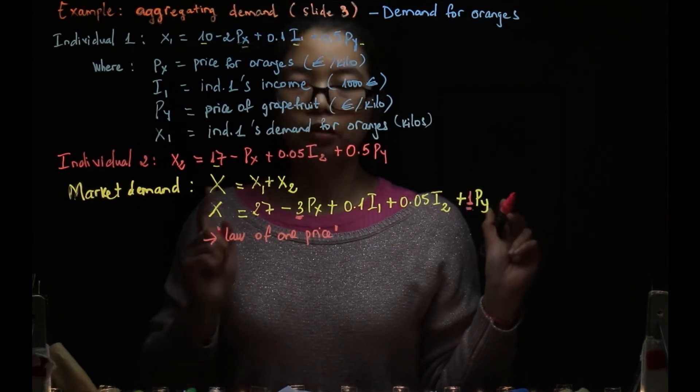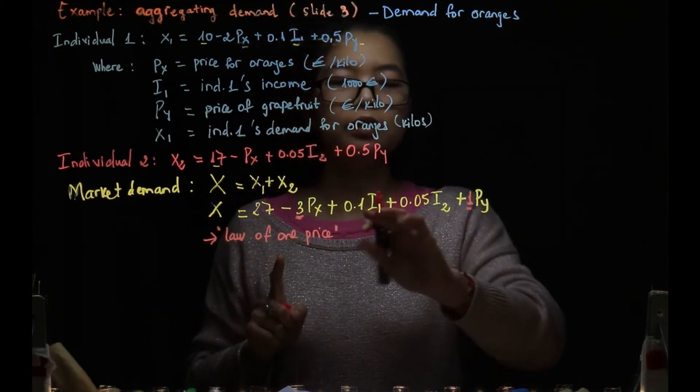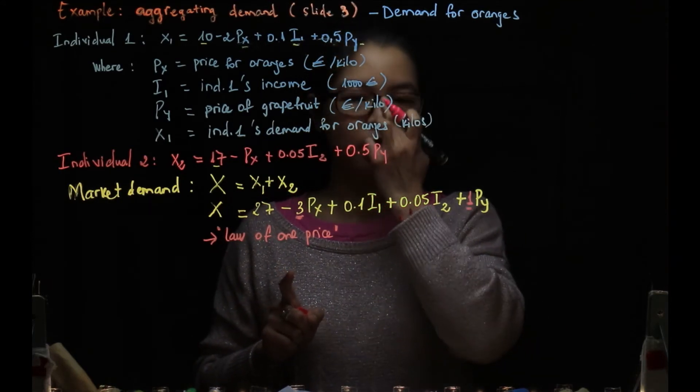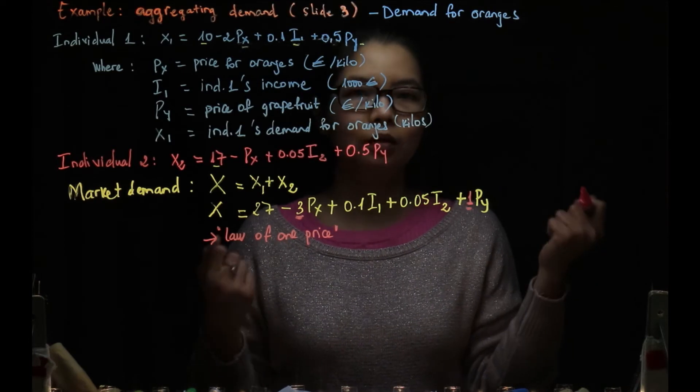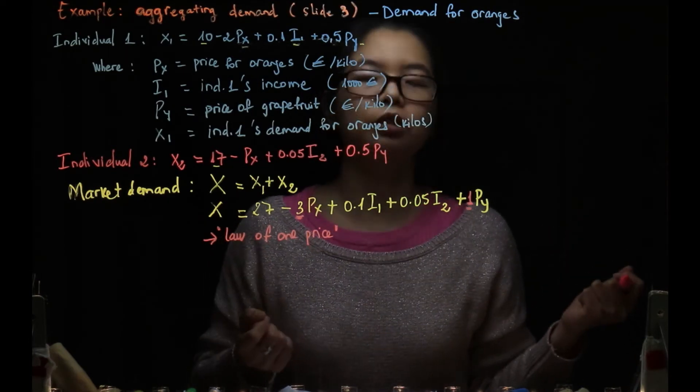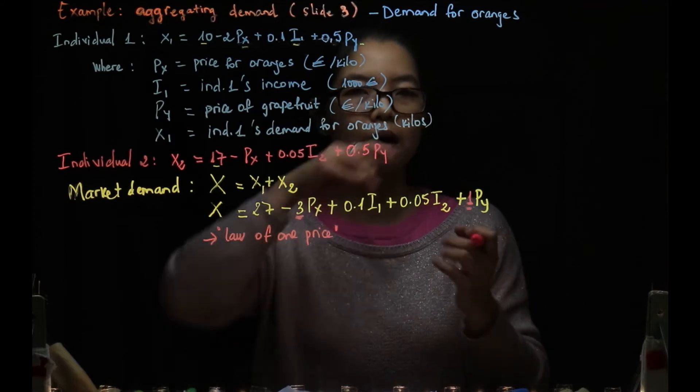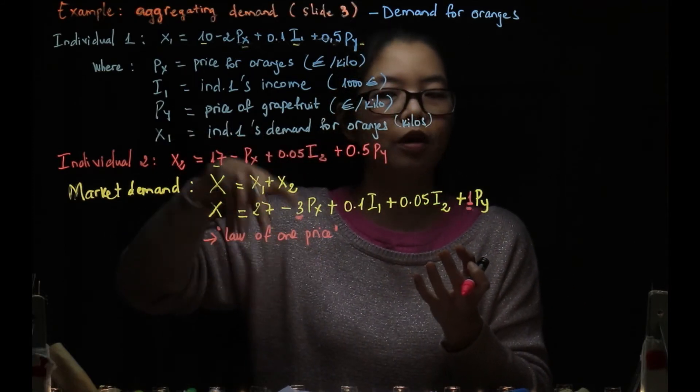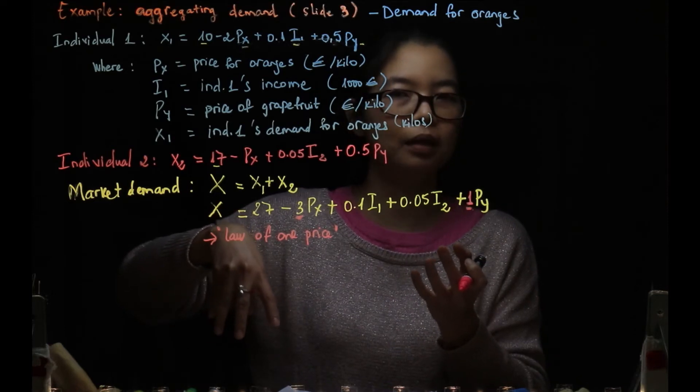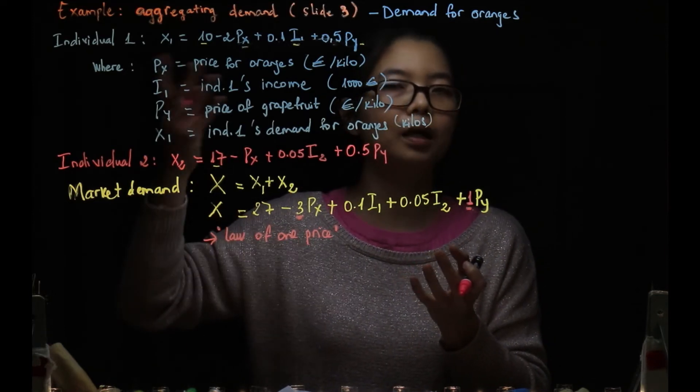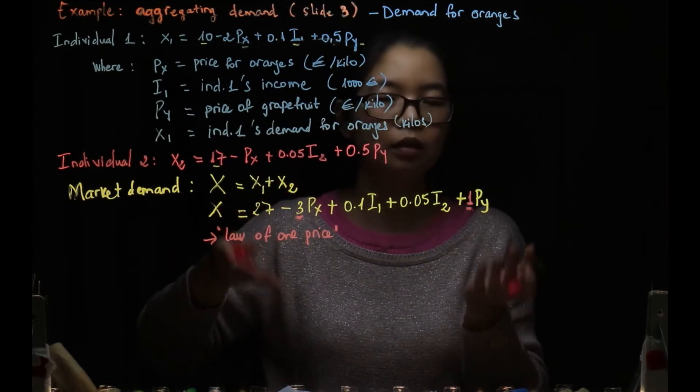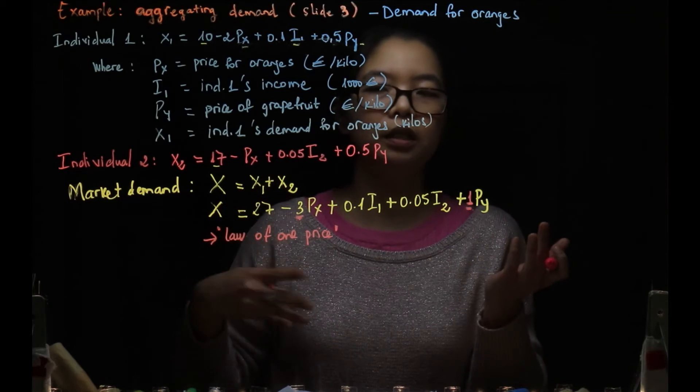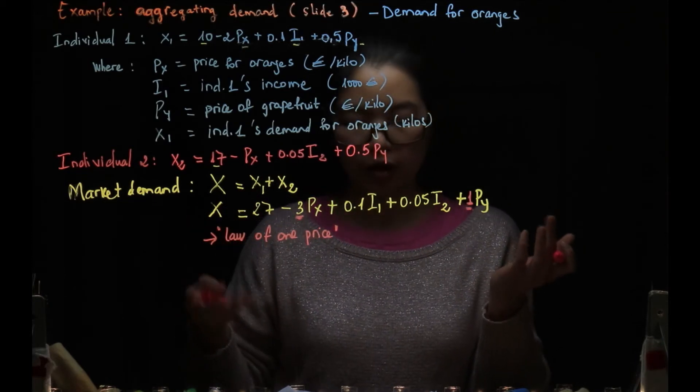The second thing: we didn't sum I1 and I2. Because remember, the distribution of incomes among individuals in the market matters for the aggregated demand. So you can't treat them as one general income. You could do that, but I'll show later we need special treatment for that.